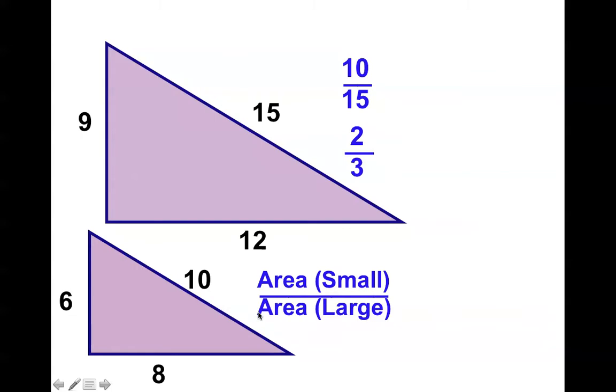So the area of the small would be 6 times 8, which is 48, divided by 2, gets me 24. The area of the large, 9 times 12, which is 108, divided by 2, is 54. If we simplify this, we can divide both of them by 6, and notice we get 4 over 9.